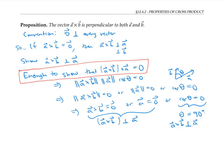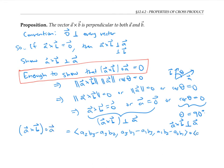To show that the dot product is zero, I'll write everything out in terms of components and do some algebra. First, A cross B is given by this expression, where a₁, a₂, and a₃ are the components of A, and b₁, b₂, b₃ are the components of B. Now, if we dot A cross B with A, we need to dot this expression with the vector of components a₁, a₂, a₃. The formula for dot product gives this expression, and distributing out gives this expression.